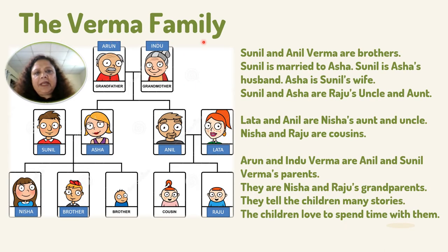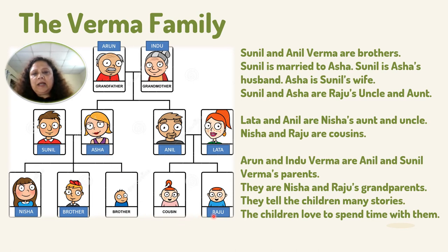The Varma Family Tree: Sunil and Anil are brothers. Sunil is married to Asha. Sunil is Asha's husband, and Asha is Sunil's wife. Sunil and Asha are Raju's uncle and aunt. Lata and Anil are Nisha's uncle and aunt.